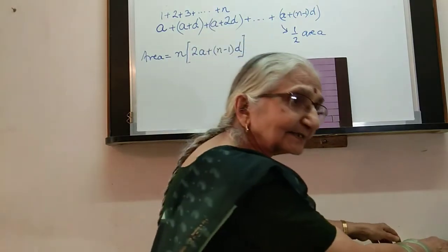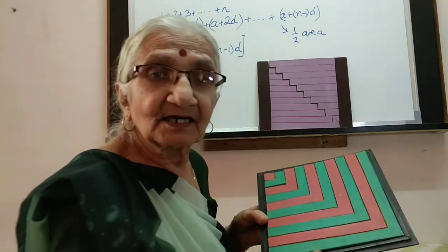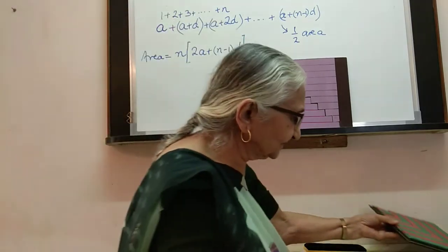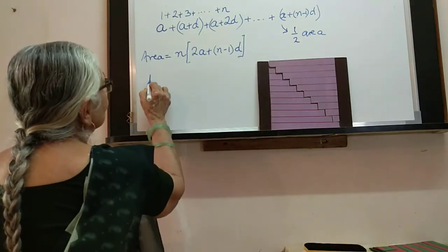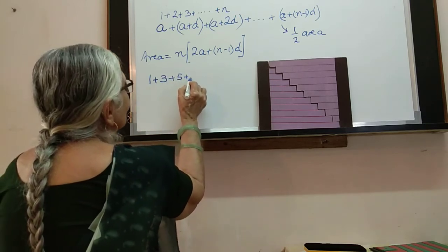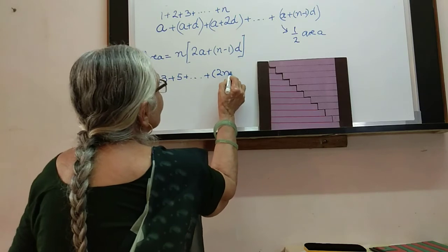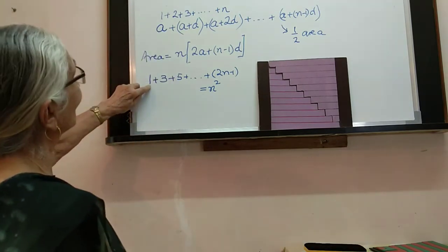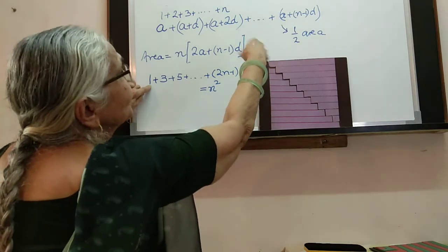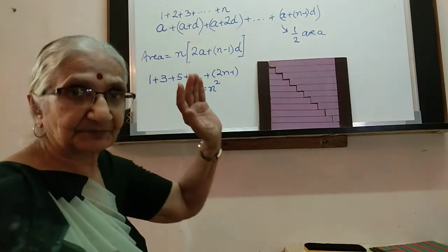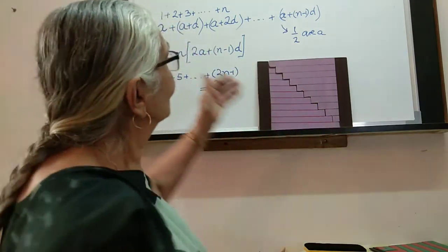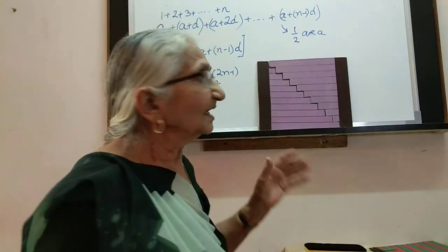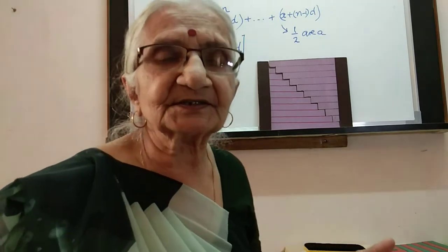Similarly, we looked at the sum 1 + 3 + 5 + ... + (2n-1), which equals n². Writing it out: a = 1, common difference d = 2. You can use this AP formula to get n² as well. So sigma-n is an AP, the sum of odd integers is an AP, and even numbers form an AP too — they are all similar in structure, yet each significant in its own way. Thank you.